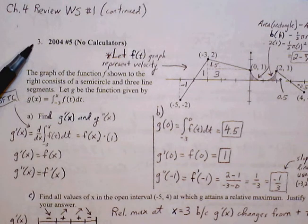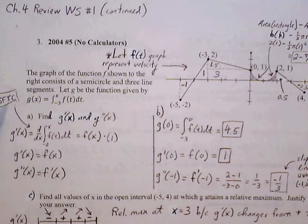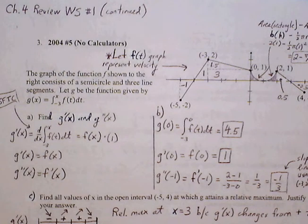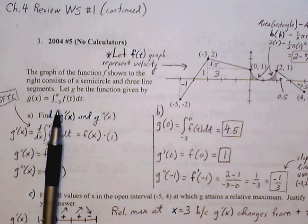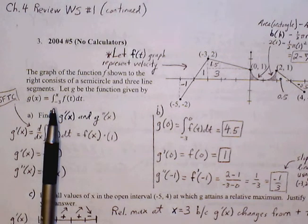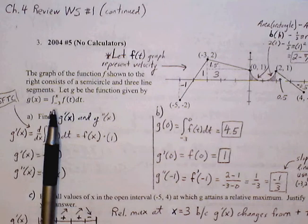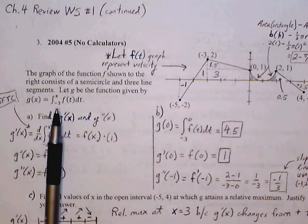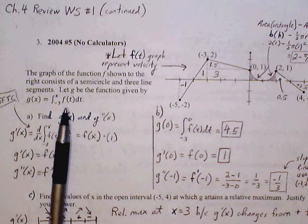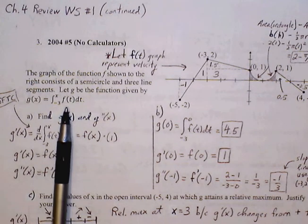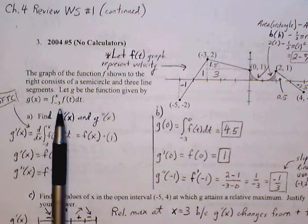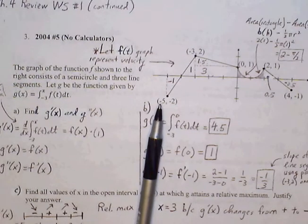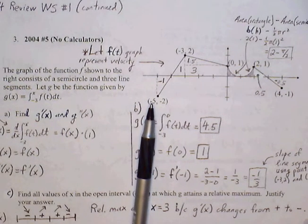Number 3: the graph of the function f is shown to the right, consisting of a semicircle and three line segments. Let g of x be the function given by g of x equals the definite integral of f of t dt from negative 3 to x. So g of x is defined as the definite integral of a function, which means that f of t is essentially the derivative function of g of x.